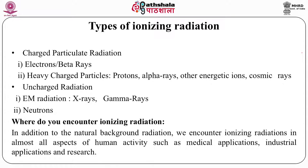Let's first get sorted what types of radiation we are talking about. Ionizing radiation can be broadly classified into two forms. One is charged particulate radiation — for example, electrons, beta rays, or heavy charged particles like protons, alpha rays, other energetic ions, cosmic rays. The other category is uncharged radiation — for example, electromagnetic radiation like x-rays, gamma rays, or neutrons.